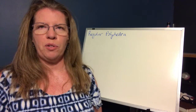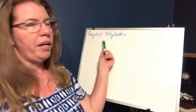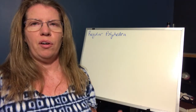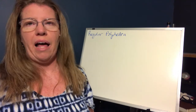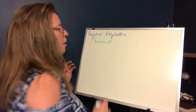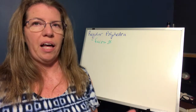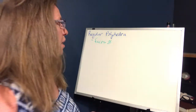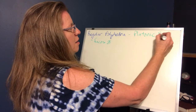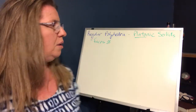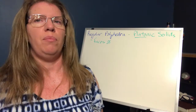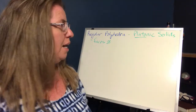Let's look at some special polyhedra — these are regular polyhedra. Similar to regular figures which had congruent sides and congruent angles, regular polyhedra have congruent faces, so all the faces are congruent. There are five different kinds of regular polyhedra, and they have a special name: they are called the Platonic solids, named after Plato, a Greek philosopher who was supposedly the first to write about them.